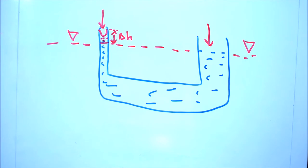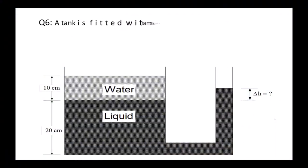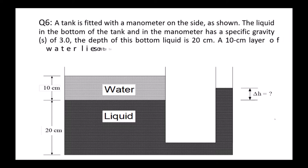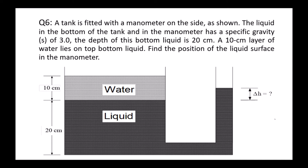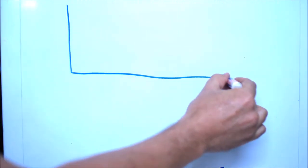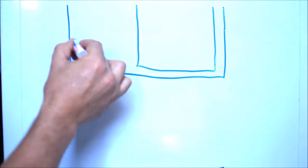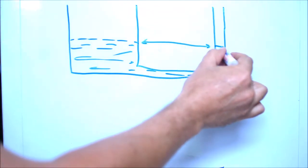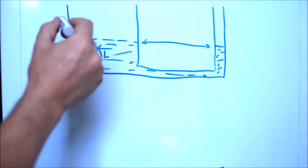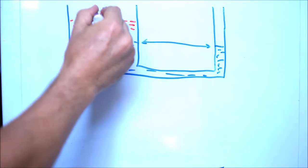Question six: we have two fluids, one is water and one is a liquid three times denser than water. We define specific gravity as the relation between any liquid and water as the reference. We have a tank with a side manometer with the liquid at the bottom and water at the top. The liquid height is 20 centimeters and water height is 10 centimeters. After adding water, the liquid level in the manometer increases by delta H. Without water, the level in the tank matches the manometer level since atmospheric pressure is applied to both surfaces.